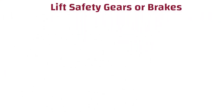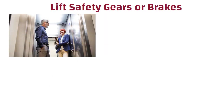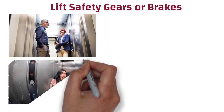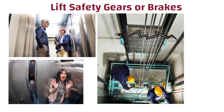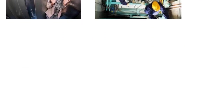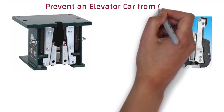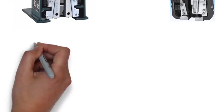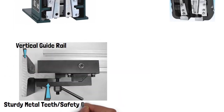Lift safety gears or brakes. Everyone who has ever traveled in an elevator has had the same thought: what if the cable holding this thing suddenly snaps? Rest assured, there is nothing to worry about. If a cable snaps, a variety of safety systems prevent an elevator car from crashing to the floor. Each car runs between two vertical guide rails with sturdy metal teeth embedded all the way up them.